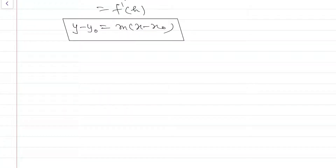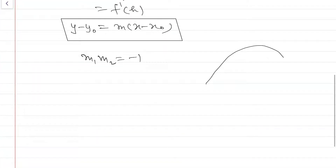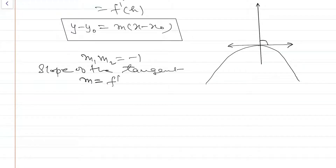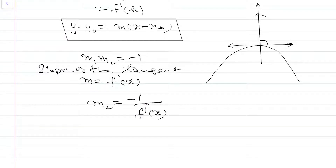Now, we know that if m1 and m2 are the slopes of two mutually perpendicular lines, then m1 × m2 = -1. Suppose we have a curve and we have to find the normal at a given point. First, we draw a tangent at that point, and then we find the normal. The slope of the normal will be m2 = -1 / f'(x). Let us jump to exercise 6.3.